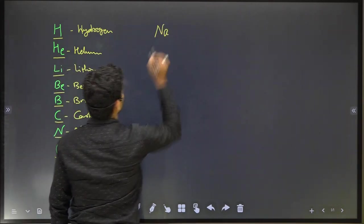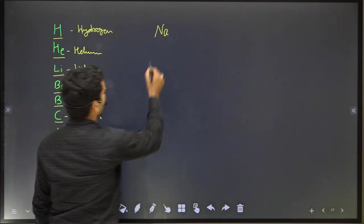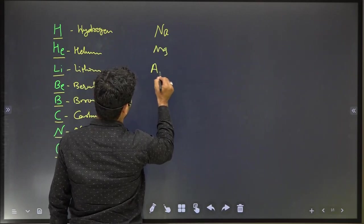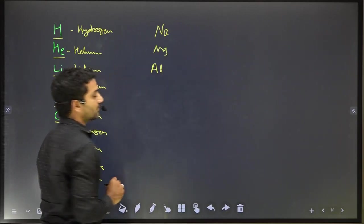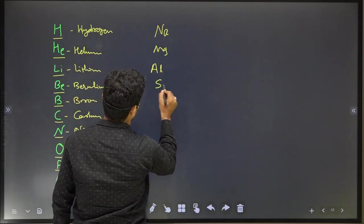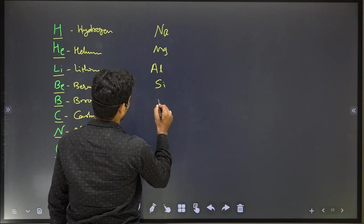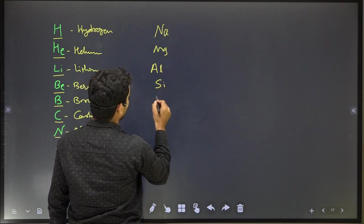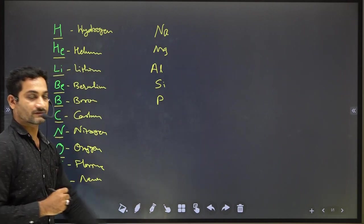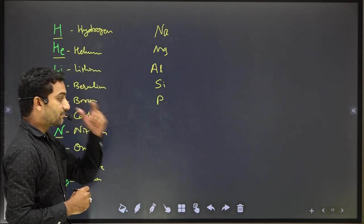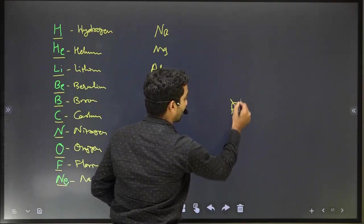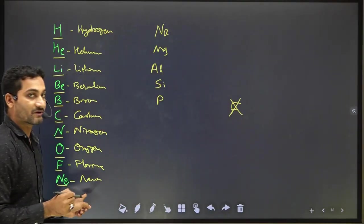Next: Soh — Sodium, May — Magnesium, A — Aluminium, C — Silicon, 4 — Phosphorus. Please keep in mind, Phosphorus symbol is P, not F. F means Fluorine. Then Sa — S means Sulphur, Cl — Chlorine, A — Argon, Po — Potassium. Please keep in mind: P means Phosphorus, K means Potassium.